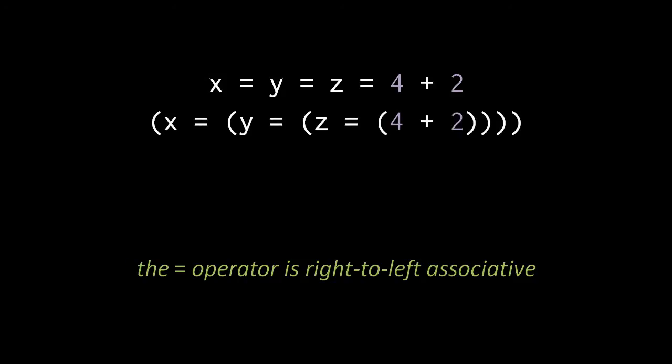If we wrote parentheses around these operations to make their order explicit, it would look like this. In effect, every variable in the chain gets assigned the same value.